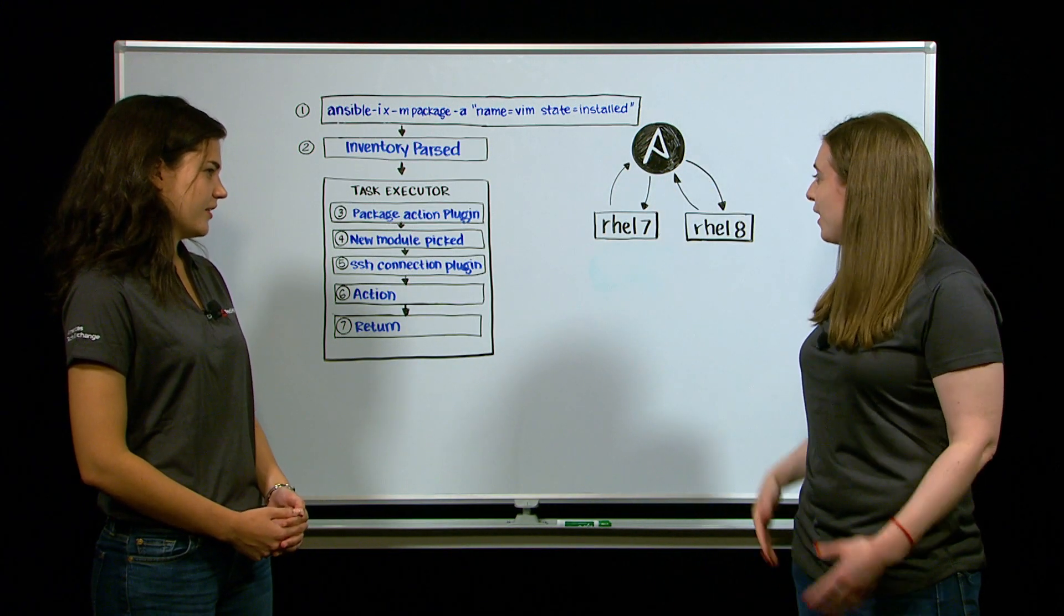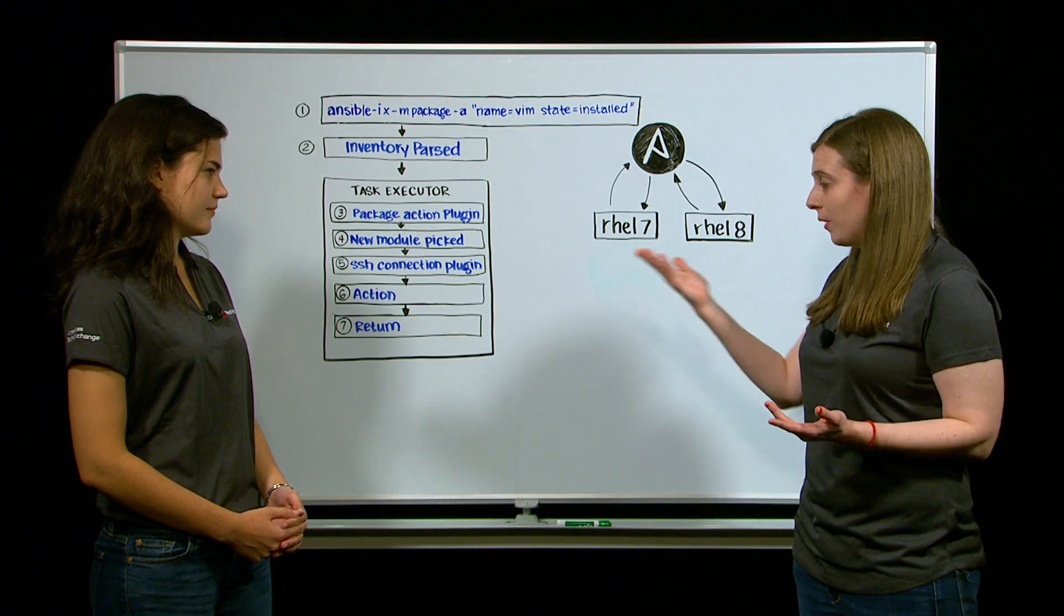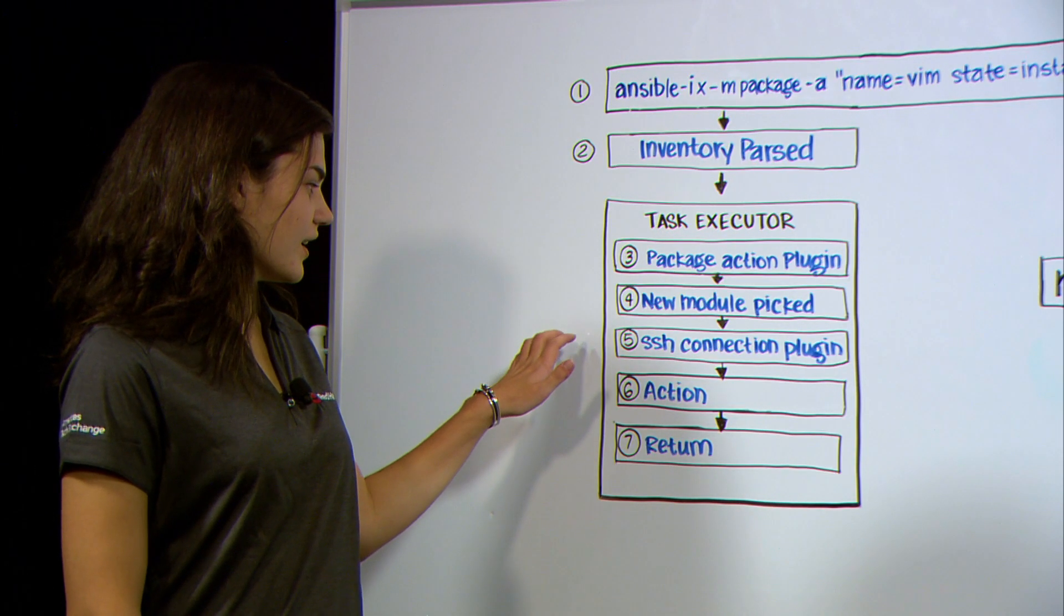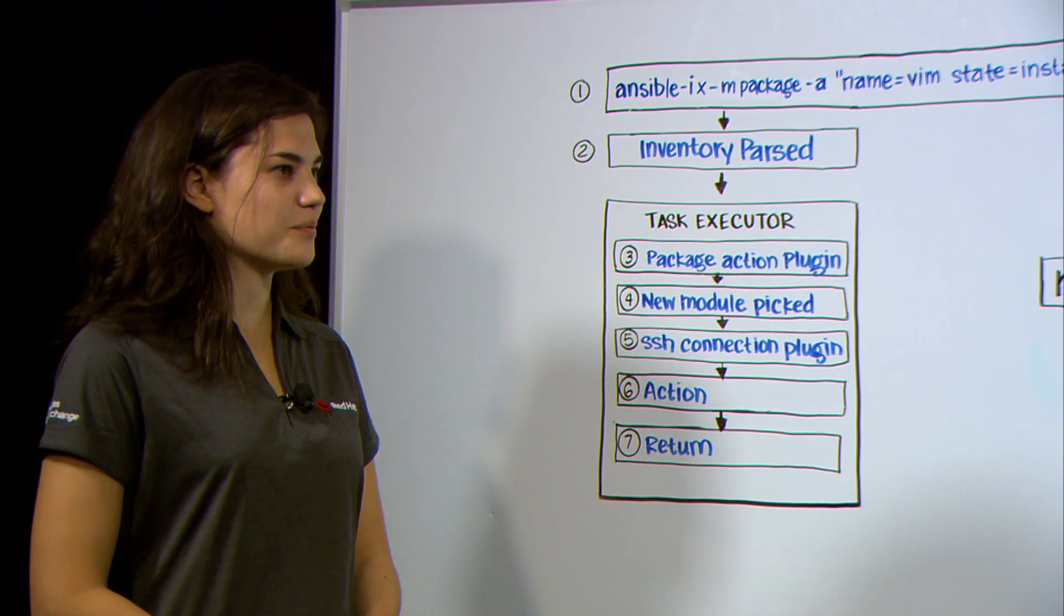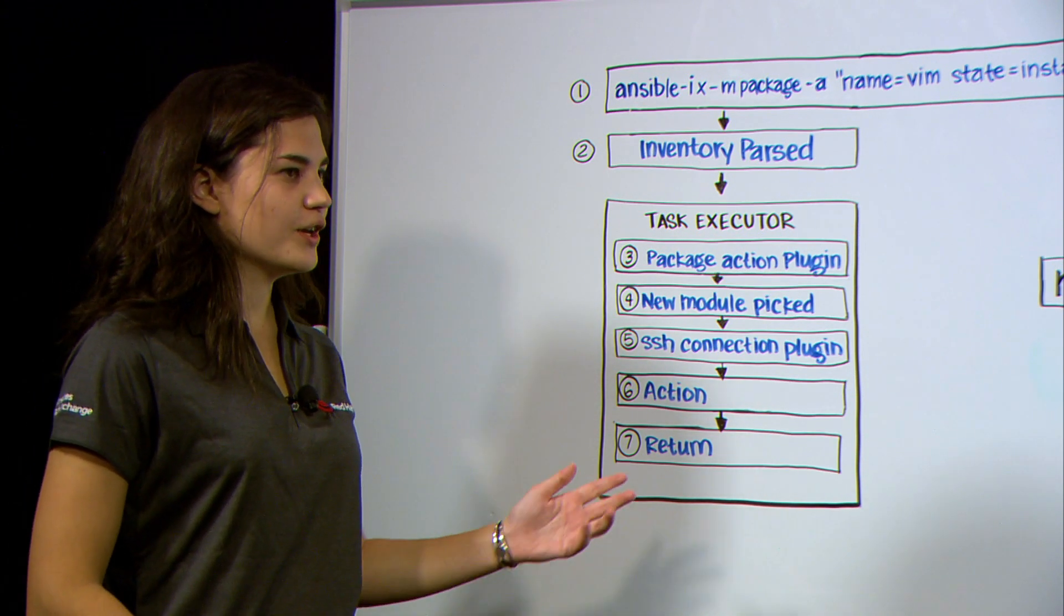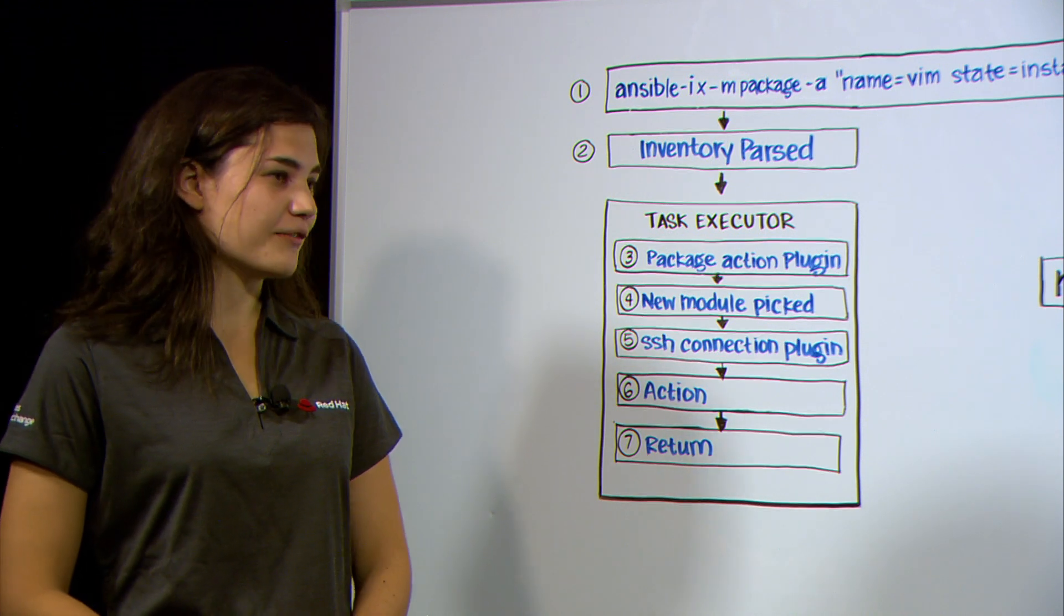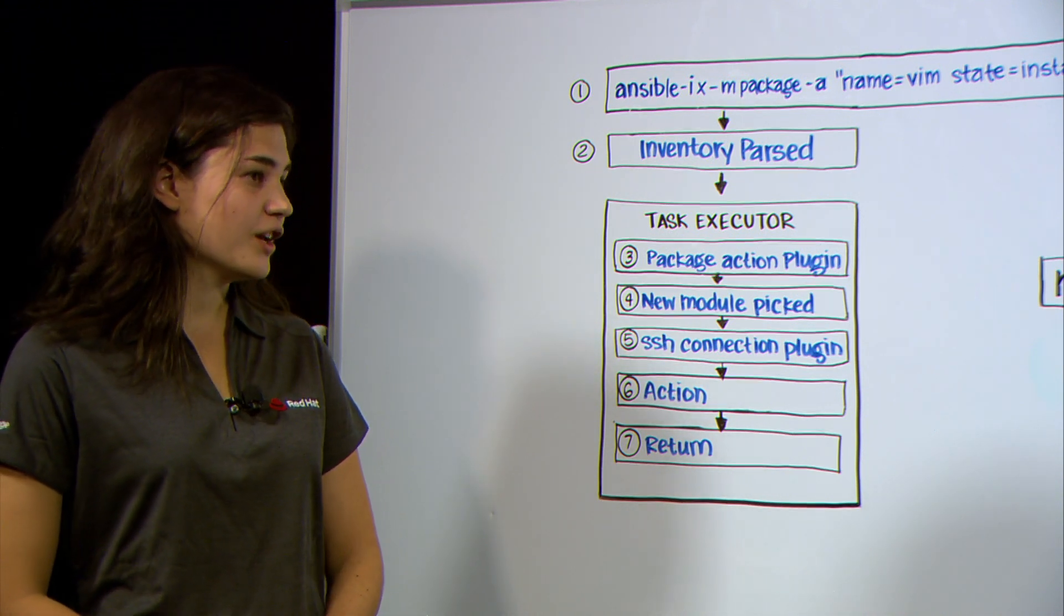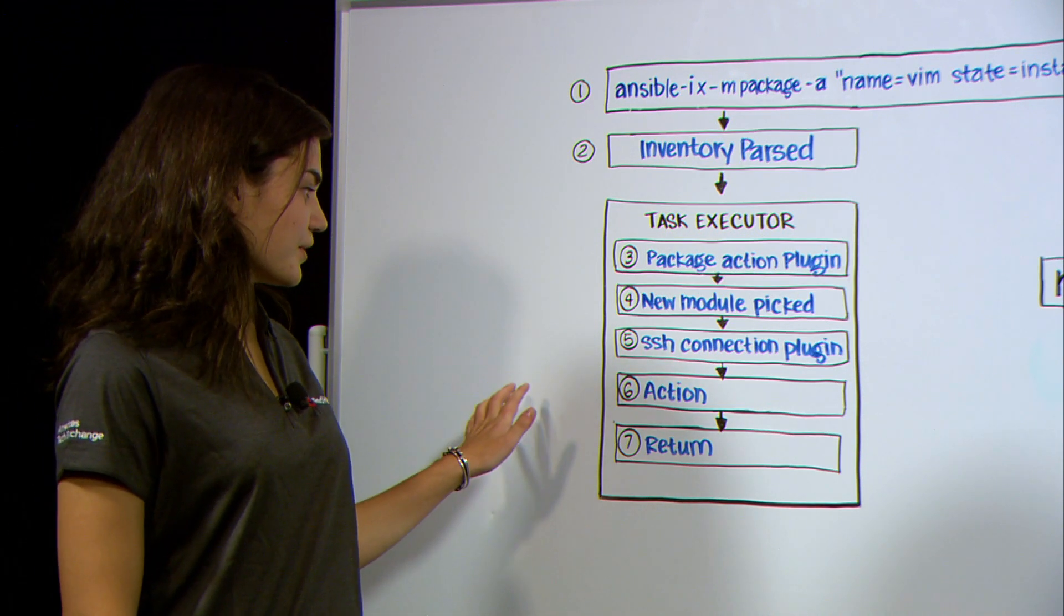Makes sense. Yeah. So once we have our new module, what does Ansible do next? Yeah, so the next thing is the task executor uses the SSH connection plug-in, which we mentioned earlier for this example. So this handles the low-level communication to stop and start the command via SSH. So once we have this connection established, what happens next?